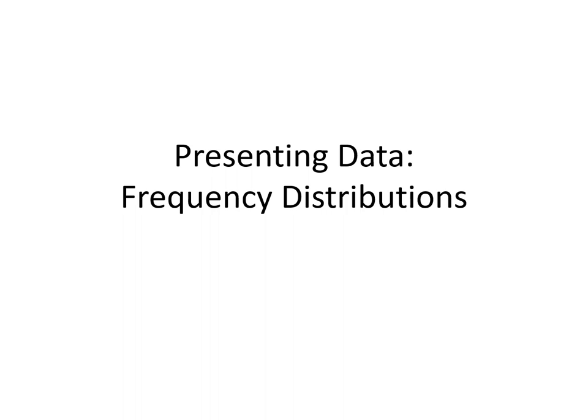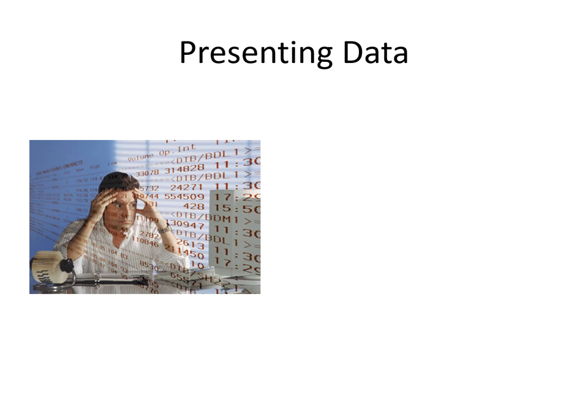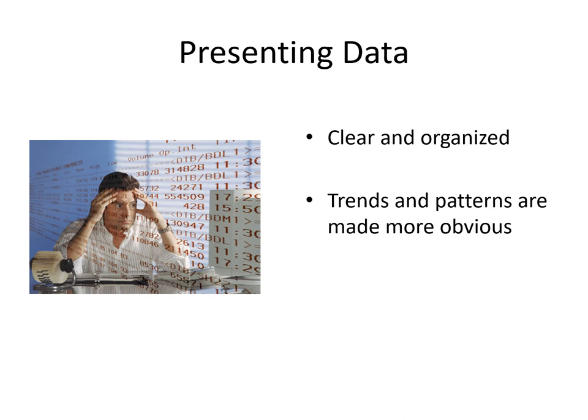When we present data in conferences or even in meetings, we have to make sure that the audience we are presenting to are actually understanding what we are trying to tell them. So we have to make sure that the data is clear and organized, that all of the trends and patterns we are seeing are also seen by them, so we have to make them more obvious. And the important variables that we are using for our conclusions are properly emphasized.